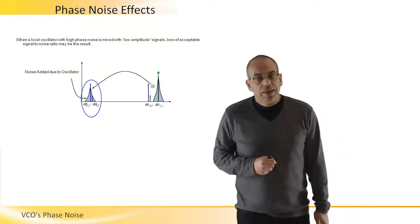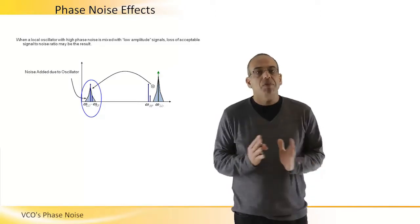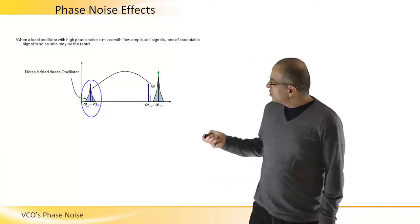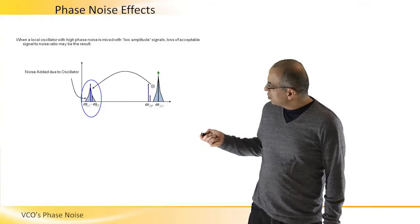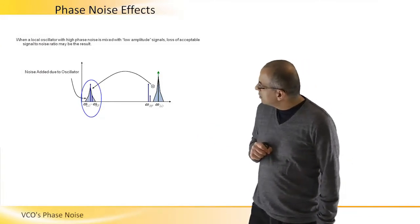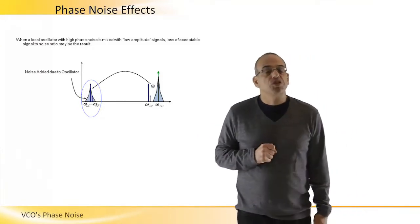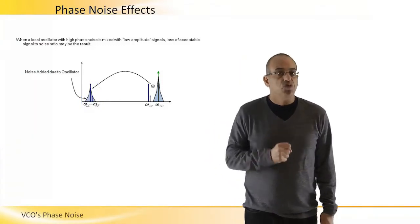It's actually buried in the phase noise, and that's why we would like to minimize phase noise—because we don't want to lose data and we don't want to lose this RF information when we down convert.